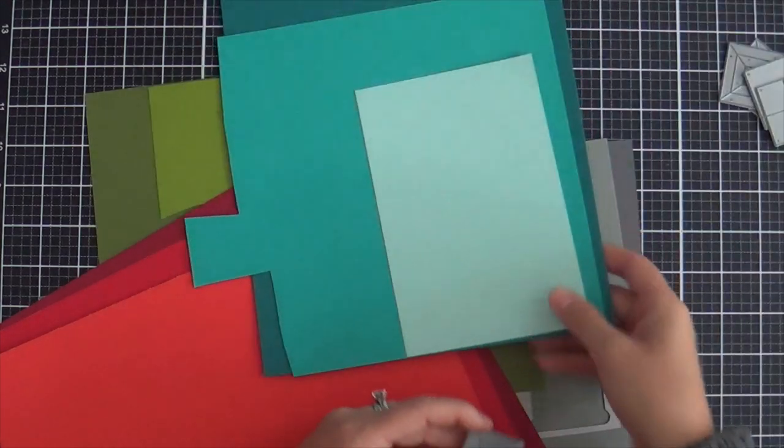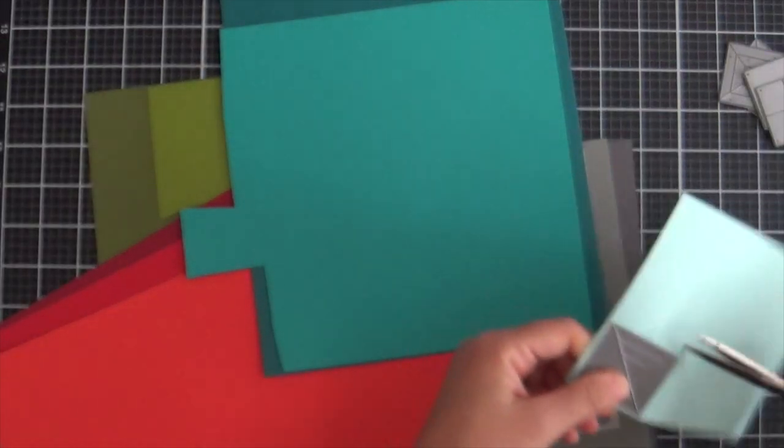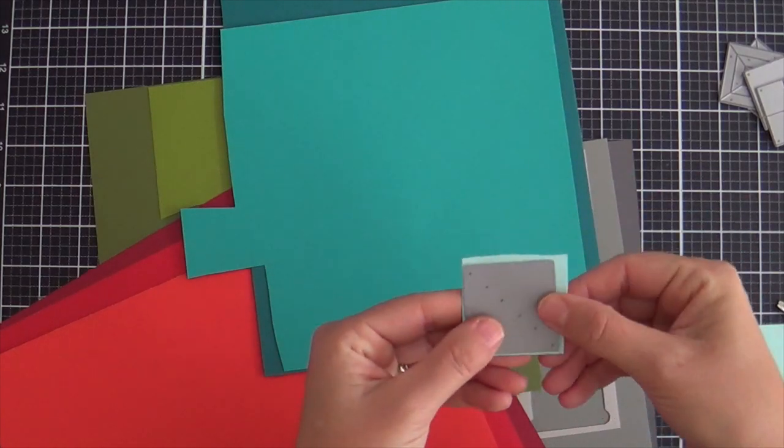See how I have families of three? That's because there's three in the die. There's like three angles. Okay, that's what I'm doing.